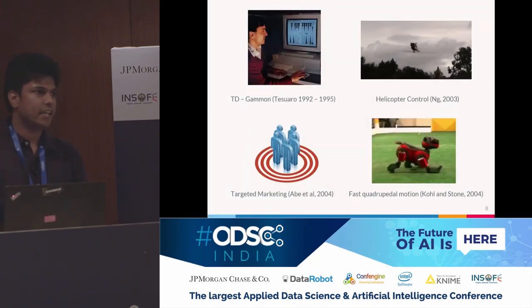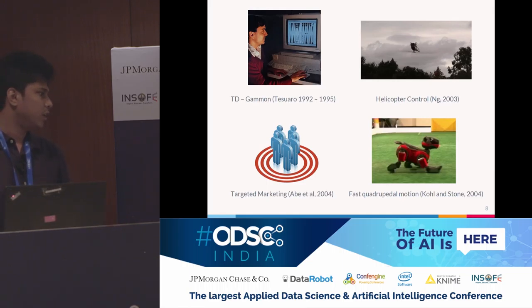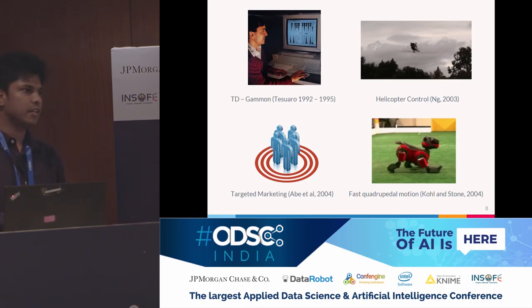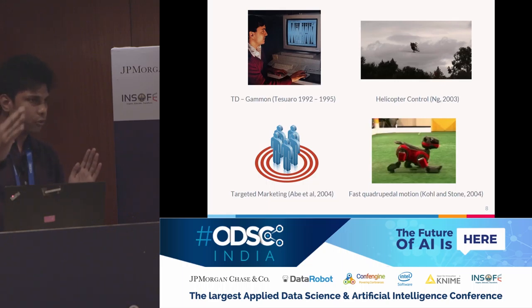Now I'll take you through the history of reinforcement learning and what problems it has managed to solve. In 1992, the first computer program to play backgammon was released. It used reinforcement learning with neural networks, and one cool thing was that it actually learned strategies no human had ever managed to discover in backgammon — it actually advanced the theory of the game.